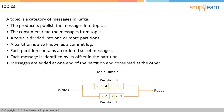The messages are written in the order 1, 2, 3, 4, 5, and 6, and read in the same order. The next message in partition zero will be message seven, written at offset six. The next message for partition one will be message six, written at offset five.